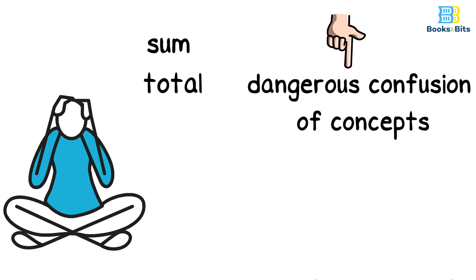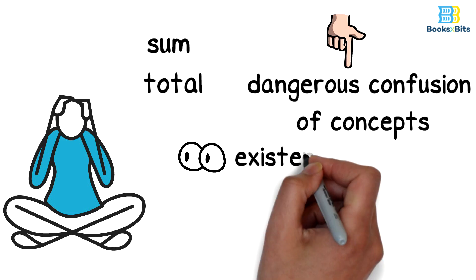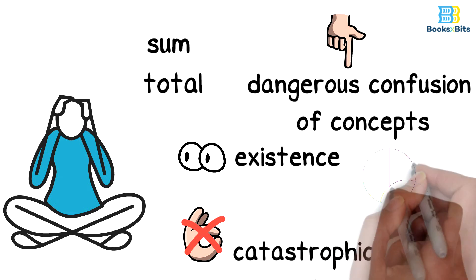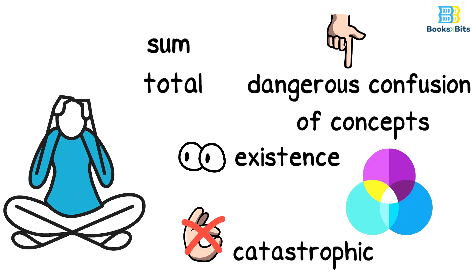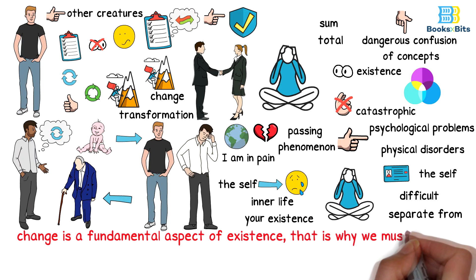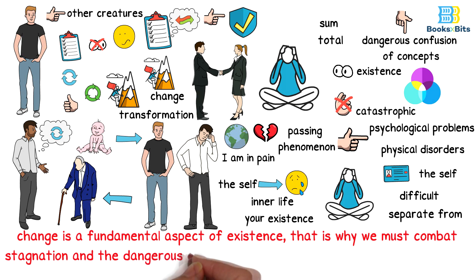Imagining depression as a sum total of the entire self is a dangerous confusion of concepts. The problem lies in the binary view of things, as we must look at existence from a different perspective. Things are not ideal or catastrophic, but rather a mixture of both in many cases. Bit to remember, change is a fundamental aspect of existence, that is why we must combat stagnation and the dangerous misconception that the self is greater than pain.